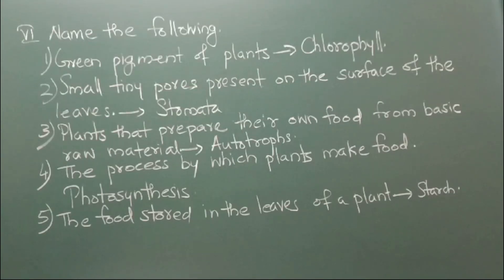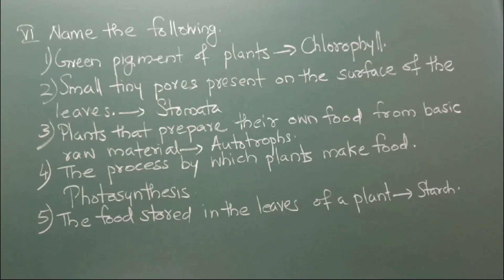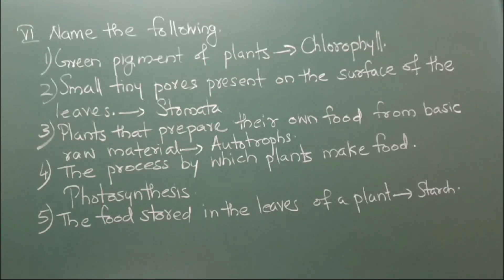Now let's see name the following. Number 1: Green pigment of plants — it is chlorophyll. Number 2: Small tiny pores present on the surface of the leaves — it is stomata. Number 3: Plants that prepare their own food from basic raw materials — it is autotrophs.